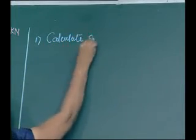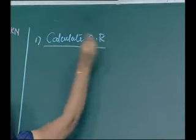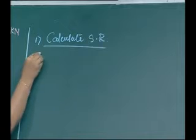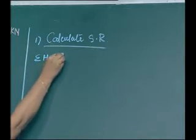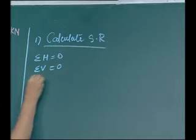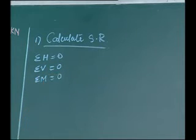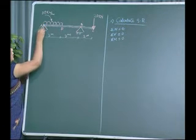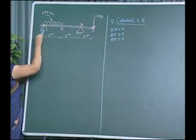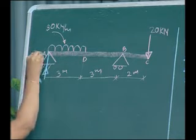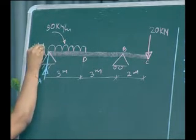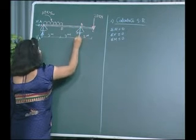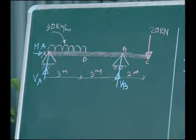The first step is to calculate support reactions by applying our conditions of equilibrium: sigma H equals zero, sigma V equals zero, and sigma moment equals zero. At support A we have a hinge support, giving two reactions — vertical reaction VA and horizontal reaction HA. At support B we have a roller support, giving only one reaction — vertical reaction VB.